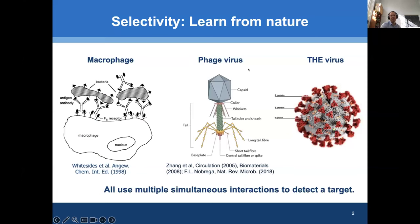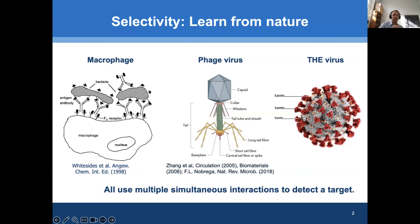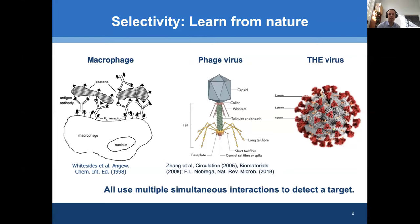We can take inspiration from nature. We can look at macrophages, or look at the COVID-19 virus. We see that in nature, most biorecognition does not occur at a single ligand-receptor level, but involves multiple simultaneous bonds. For example, a macrophage attacks a bacterium by forming multiple simultaneous bonds. The COVID virus has multiple spike proteins that simultaneously interact with the cell surface. A simple explanation is that multiple bonds are stronger than one bond.